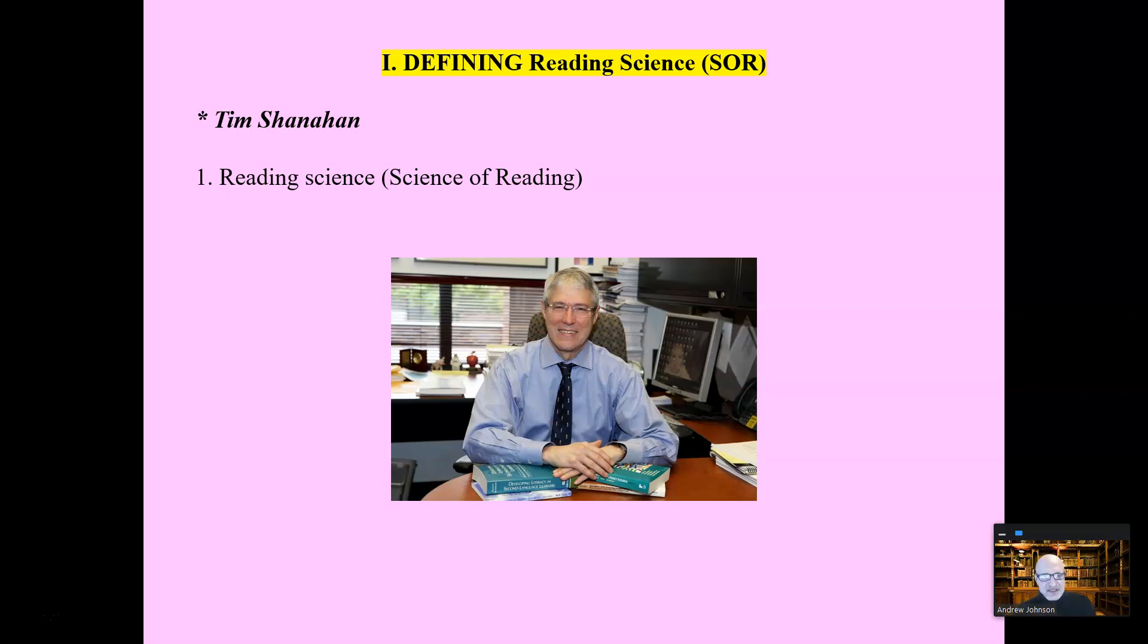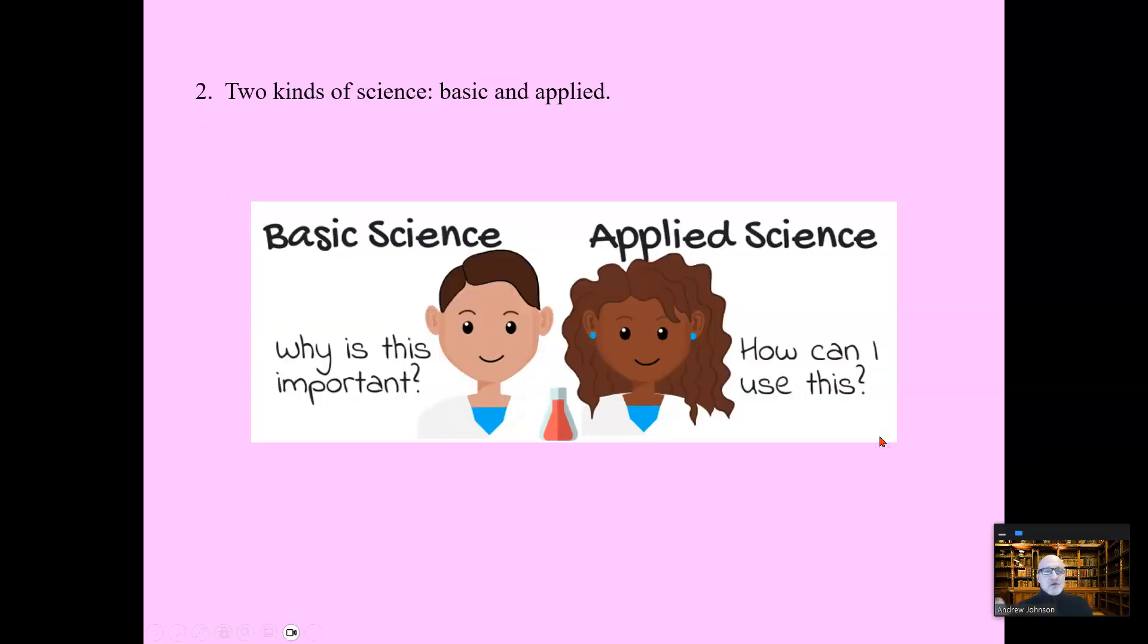And only strategies that have proven to be effective by applied research conducted in a classroom using controlled and experimental research can be said to be science of reading strategies. We'll delve into that again, but there are two types of science, essentially basic science and applied science.